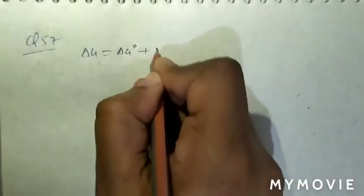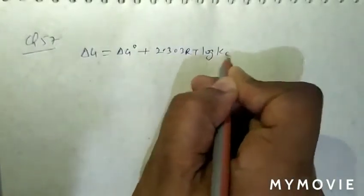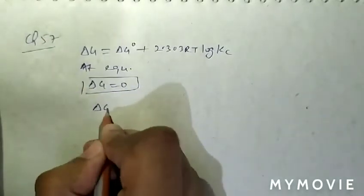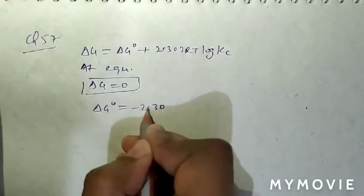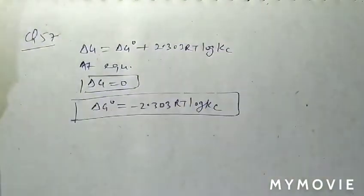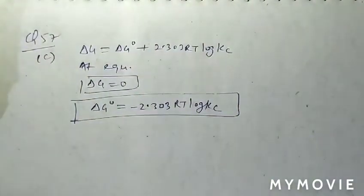Question 57: for a reversible process at equilibrium, ΔG = ΔG° + 2.303RT log Kc. At equilibrium ΔG = 0, so ΔG° = −2.303RT log Kc. Question 57, option C is correct.